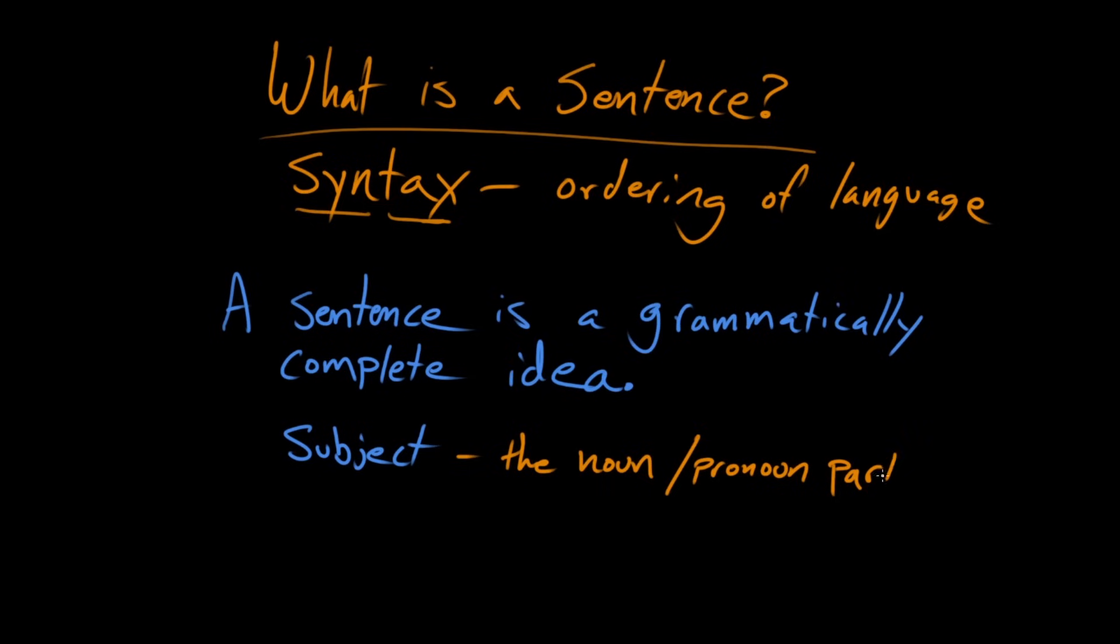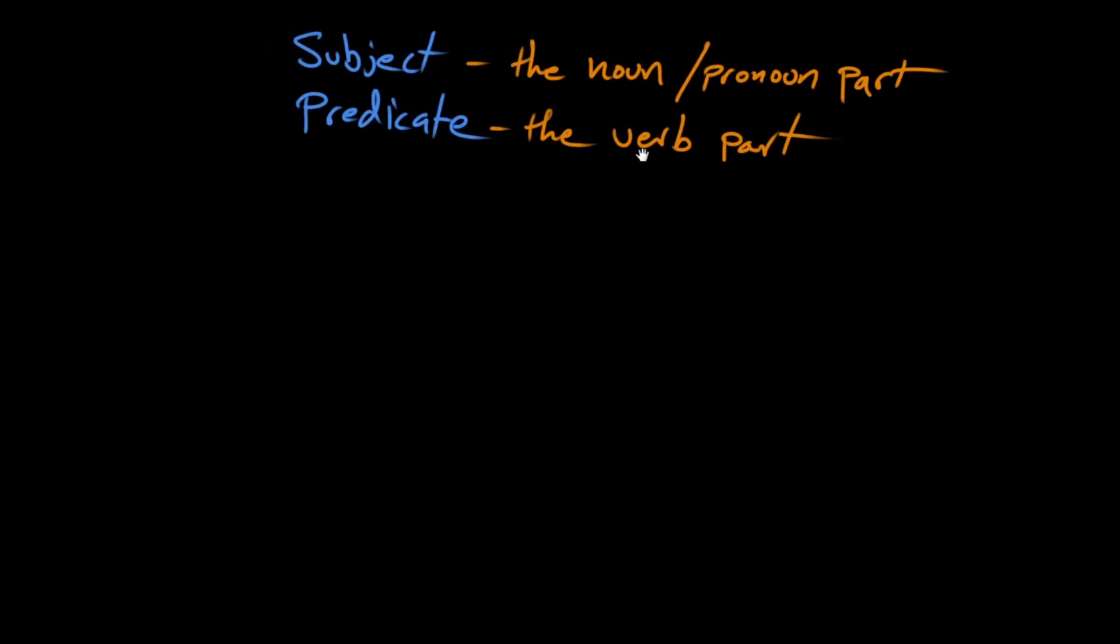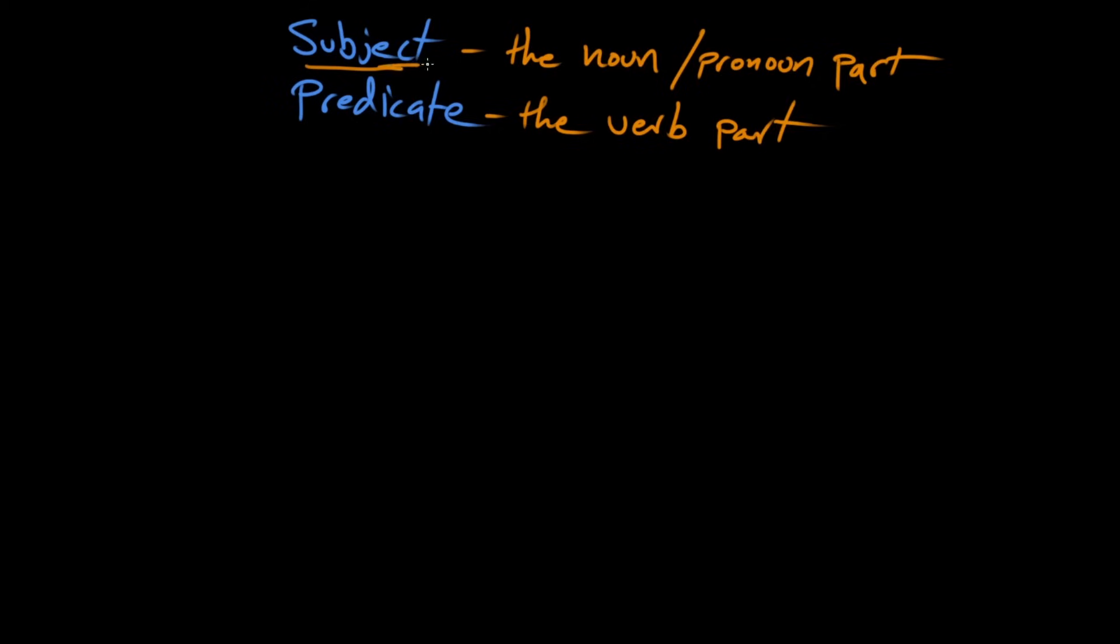And then we have the verb part, which is the predicate. So a sentence has, it has to have like a thing or a noun or a pronoun. Sure, that's the subject. Yeah, and something that it's doing. Sure, that's the predicate. Yeah.